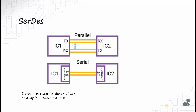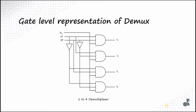Let's move on to Verilog coding of the demultiplexer circuit, starting with data flow modeling. For data flow modeling, you need a gate level representation of the demux. As you can see in the gate level circuit, DIN — the data input — must be connected to all outputs Y0 to Y3. It is given to all AND gates based on different combinations of select lines S0 and S1. When S0 and S1 are both 0, DIN goes to Y0; when S0 is 1 and S1 is 0, it goes to Y1, and so on. From this gate level representation, we can easily write Verilog in gate level or data flow modeling.